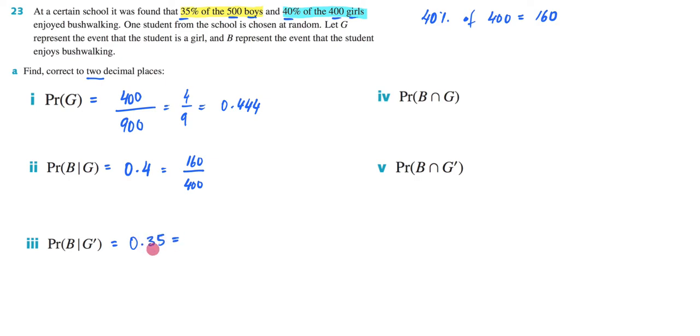And again, if we wanted to understand the thinking behind this, what it is, is that 35% of the 500 boys enjoy bushwalking, and 35% of 500 is equivalent to 175.